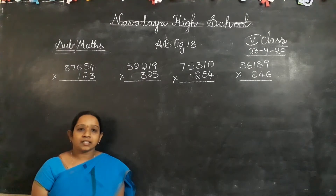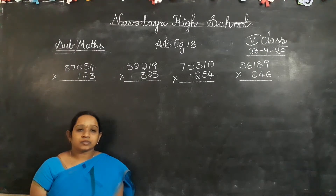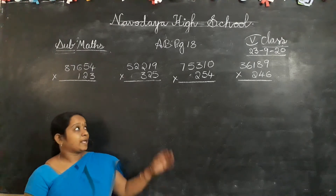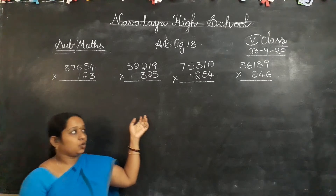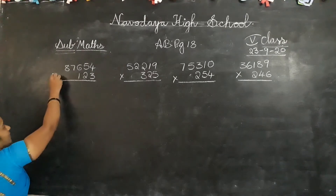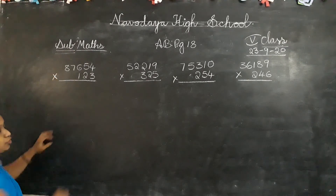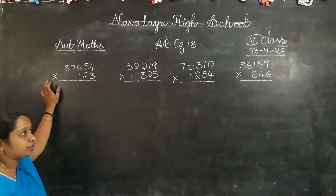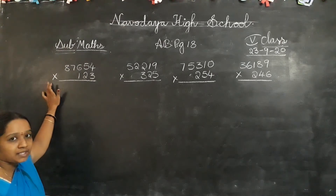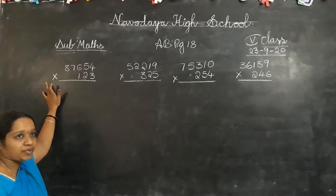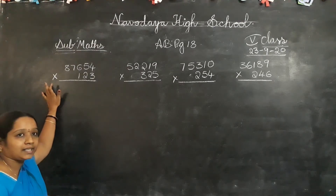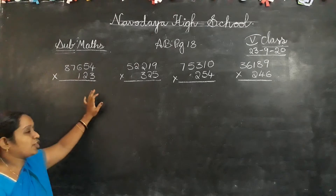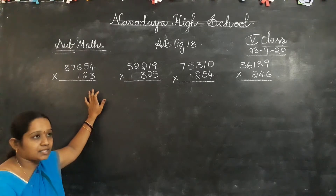Good morning 6th class children. We are doing the activity book, and this video is a continuation of that. Page number 18. Look here — what is this symbol, children? Into. Into means multiplication. Do you know how to do multiplication? Yes. In the previous videos you already learnt. And do you know your tables? Yes.